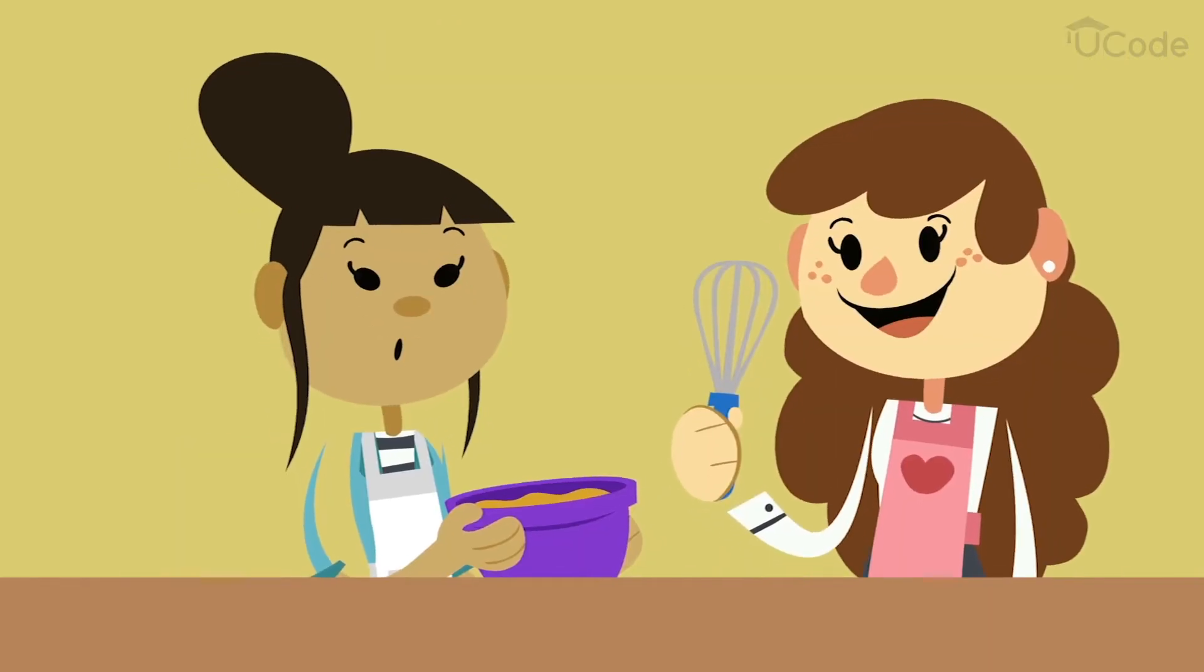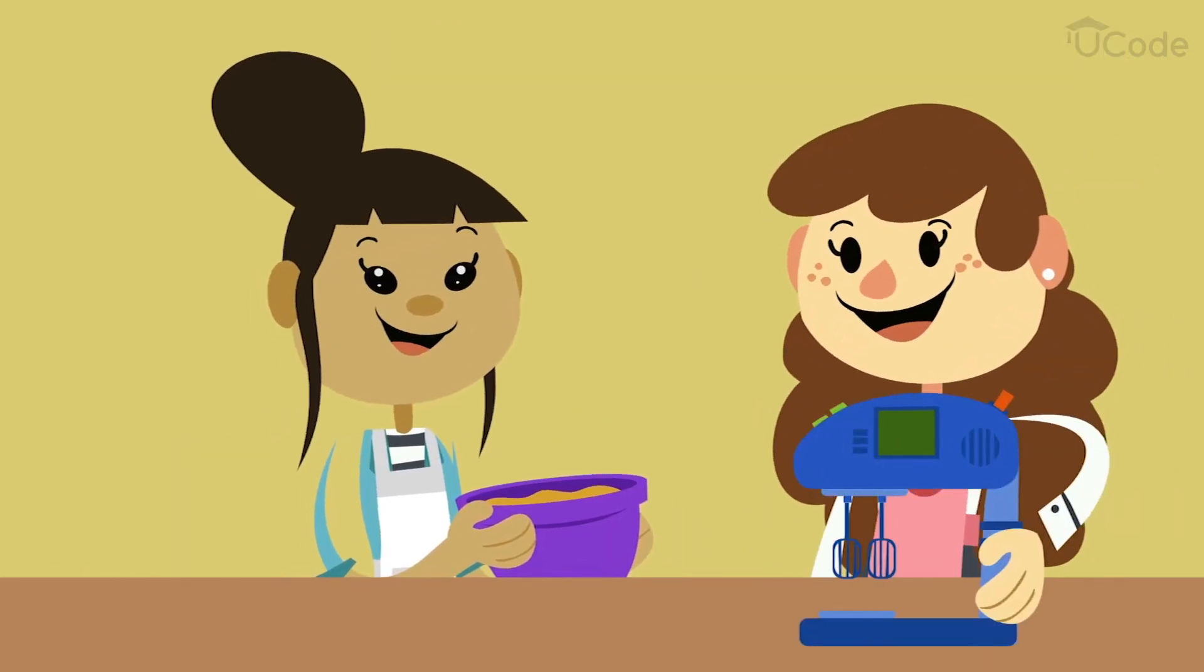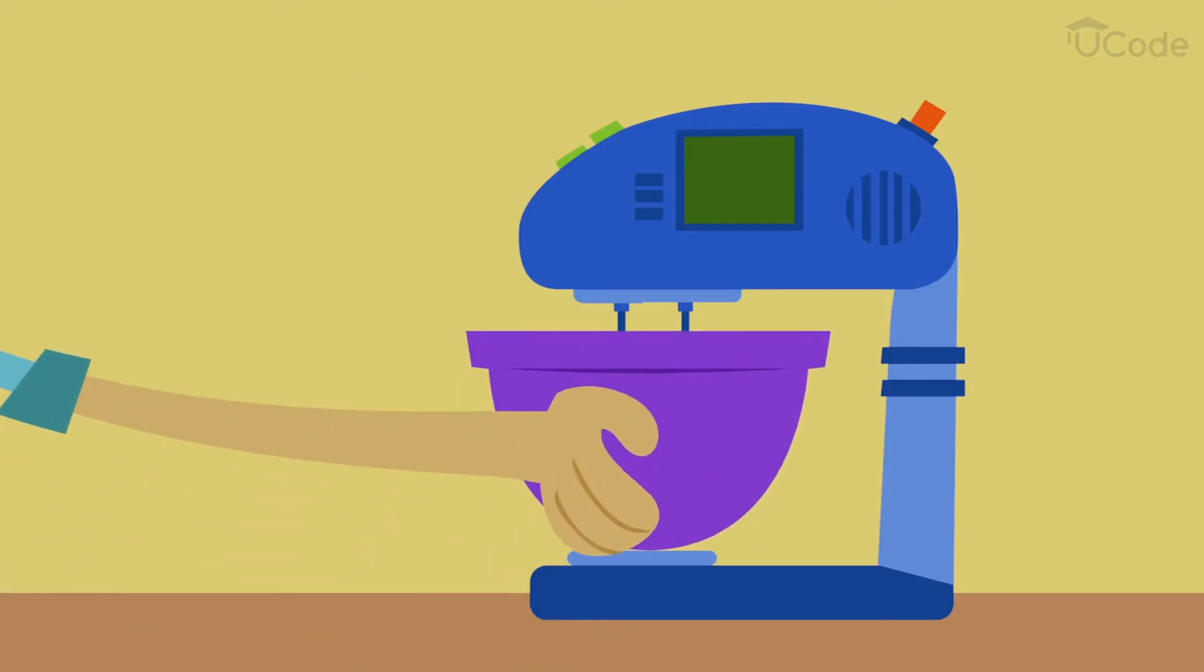It would be like if a friend let you use a standing mixer. You could just place the bowl under the mixer and let the appliance do all the work. There are several types of programming loops.